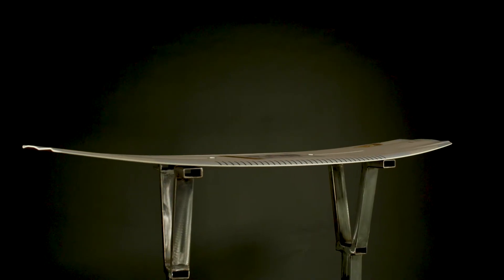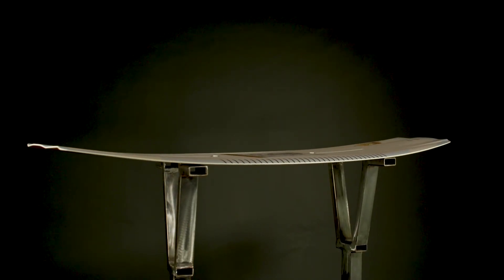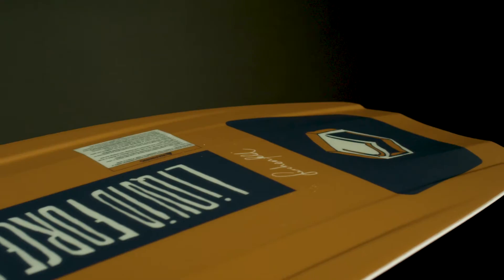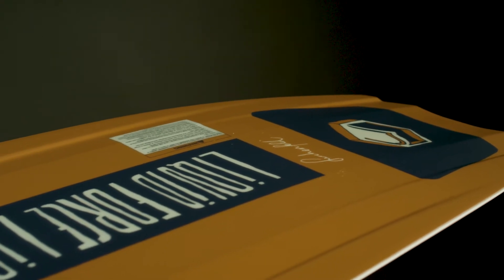An aggressive three-stage rocker keeps the Peak lively and catch-free. Its hull features a center concave running through the middle and edge channels on the rail.